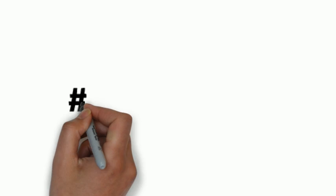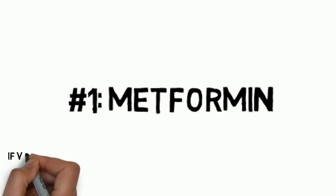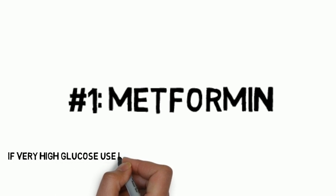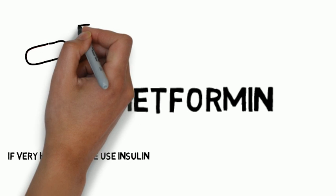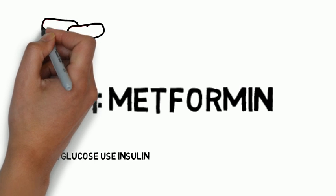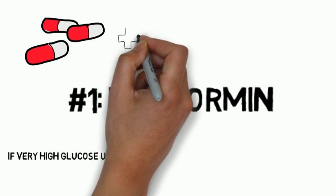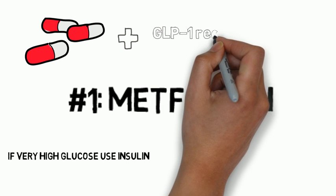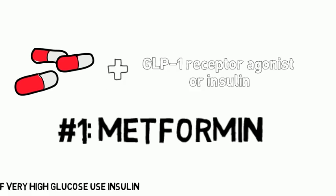For type 2 diabetes, the initial drug of choice is metformin. If a newly diagnosed type 2 diabetic has significantly elevated blood glucose levels or A1c, consider starting with insulin therapy from the beginning. If maximal monotherapy with oral agents does not achieve the hemoglobin A1c target over 3 to 6 months, add a second oral agent, a GLP-1 receptor agonist, or insulin.